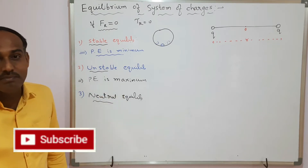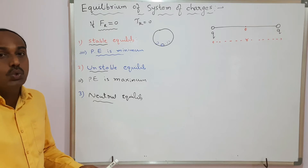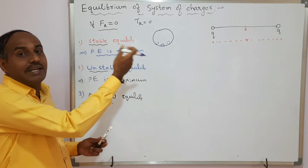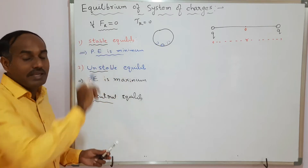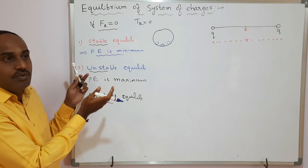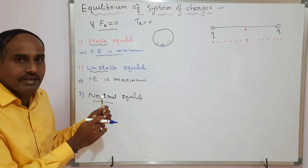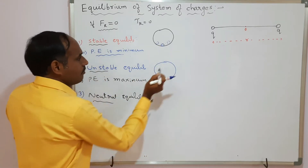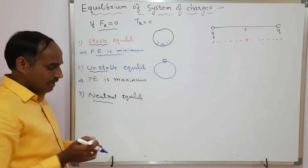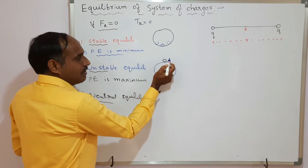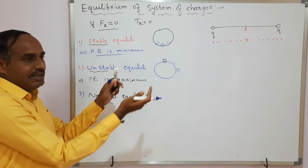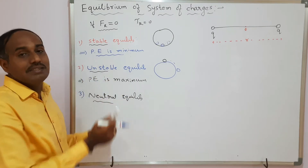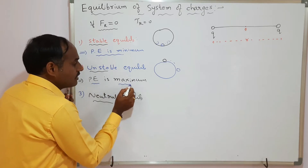In unstable equilibrium, there is no tendency of a body to regain its original position on being disturbed — whereas in stable equilibrium there is such a tendency. To understand this, if we place the same ball on the top surface of the hollow sphere and disturb it, it will fall down to the right or left and cannot regain its original position. Such bodies are said to be under unstable equilibrium, where the potential energy is maximum.